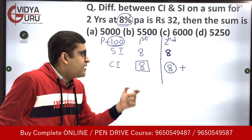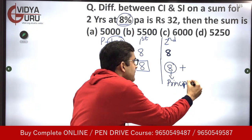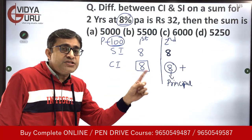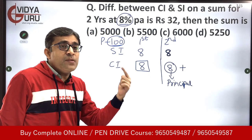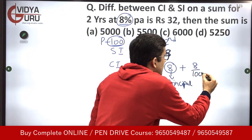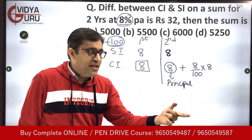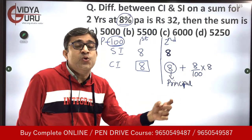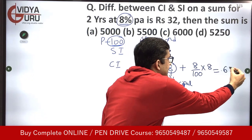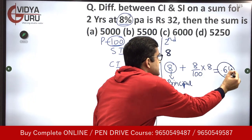Even on this 8 rupees we will be earning 8% interest. So basically 8% of 8 rupees — that's the extra income, the extra interest that is going to get credited in the second year. And it turns out to be 0.64 rupees.